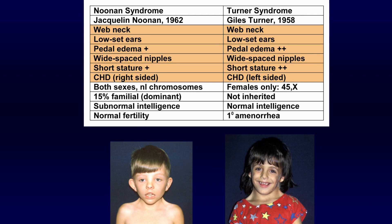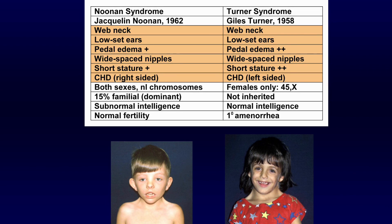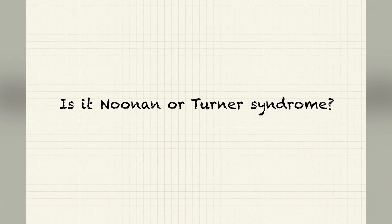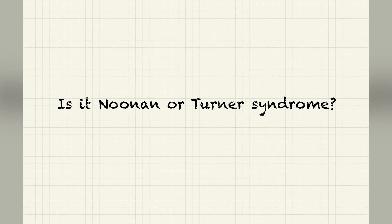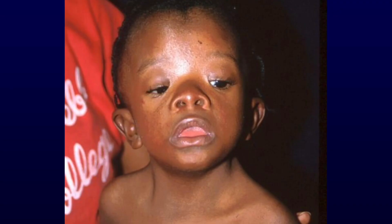The last two features: a patient of Noonan syndrome will have normal fertility but subnormal intelligence. In contrast, a patient of Turner syndrome will present with primary amenorrhea and normal intelligence.